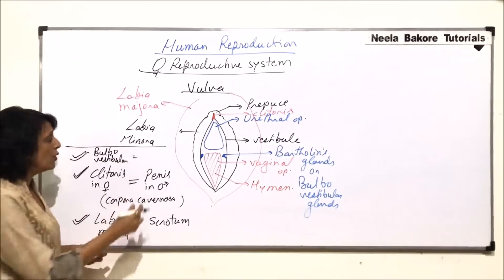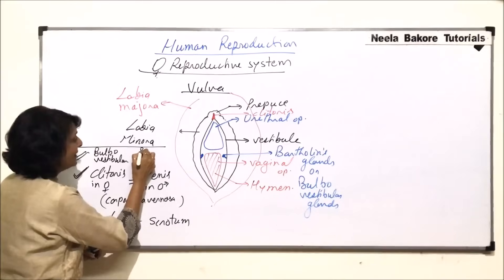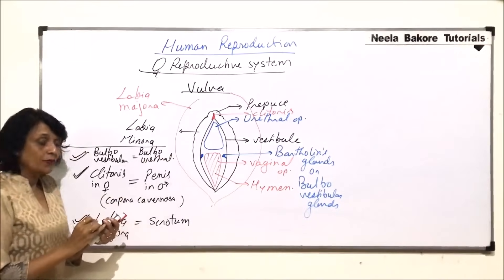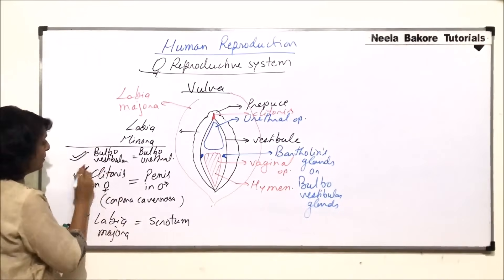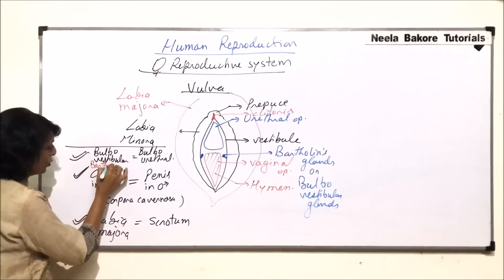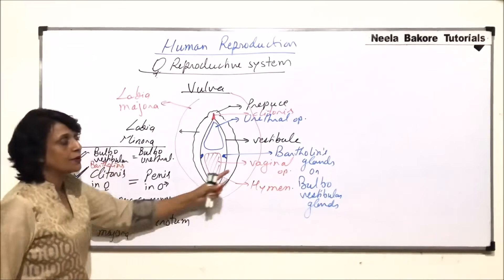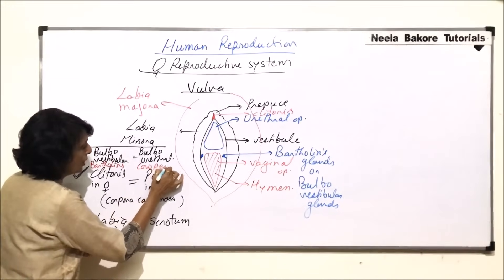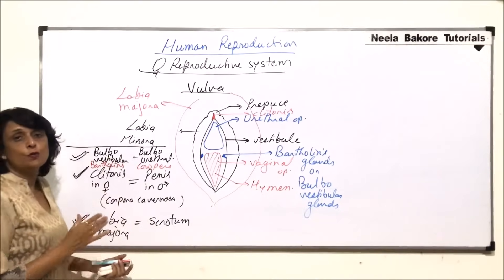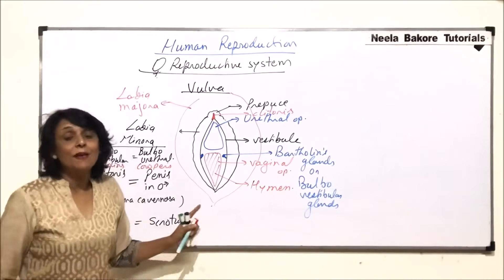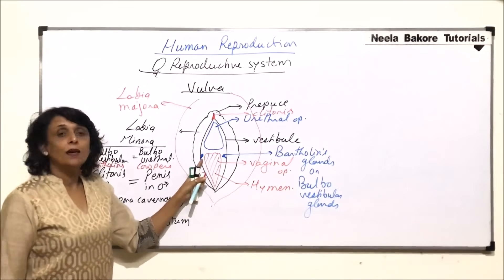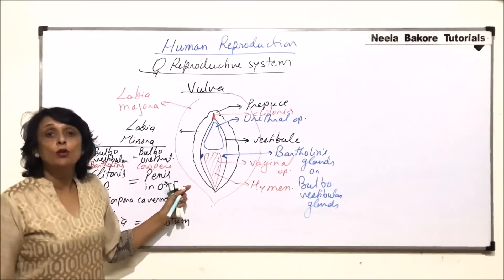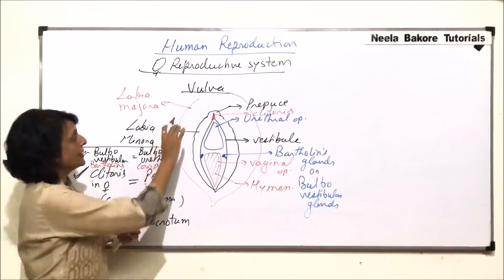In females, these glands are called bulbo-vestibular glands. The same type of mucus-producing glands are found in males as well, which are Cowper's glands, also known as bulbo-urethral glands. So bulbo-vestibular glands are also known as Bartholin's glands, and bulbo-urethral glands in males are known as Cowper's glands. These are homologous structures.